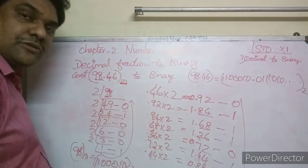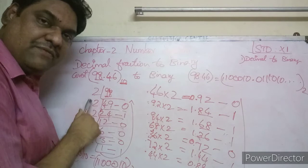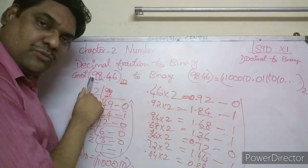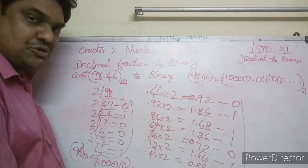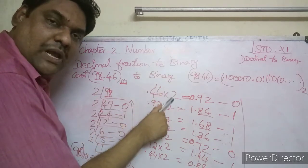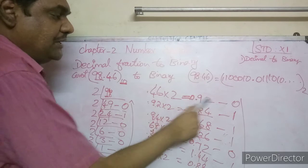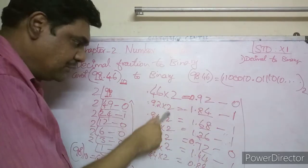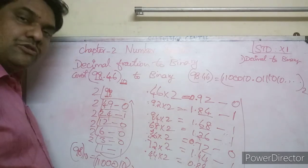Children, this is how you convert a decimal fraction to binary. For the integer part, use the ordinary division or sum of powers of two method. For the fractional part after the decimal point, multiply by 2 repeatedly and record the integer part each time. Thank you, children.